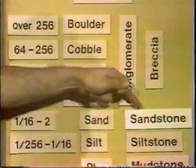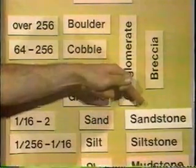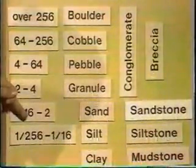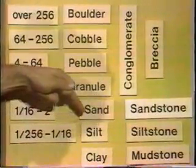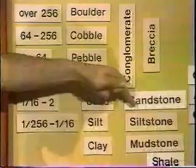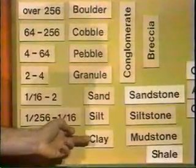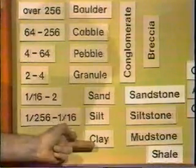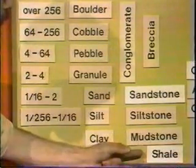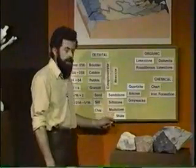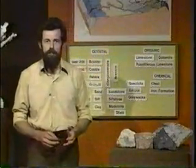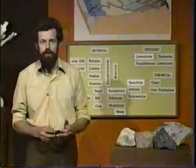That sand, when consolidated, will form sandstone. The particles smaller than sand — if between 1/256th of a millimeter and 1/16th of a millimeter — that material is silt, and the resultant rock is a siltstone. For material still finer than 1/256th of a millimeter, that is clay, which when consolidated forms mudstone — sometimes called claystone — and when it splits easily, called shale. So the basis of the division of the detrital sedimentary rocks is size: conglomerate, sandstone, siltstone, mudstone.